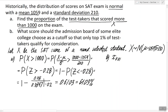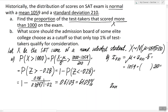Now let's answer Part B. To find x₀.₀₁, we use the formula: x_α = μ + z_α · σ. In our case, α = 0.01. μ is given as 1059 and σ is 210. To find z₀.₀₁, we look for 1 − α = 0.99 in the table.